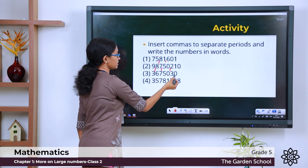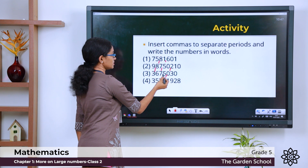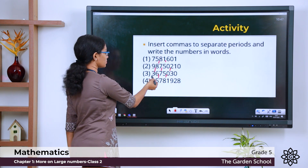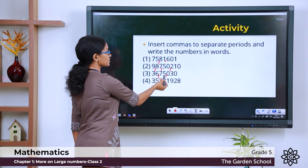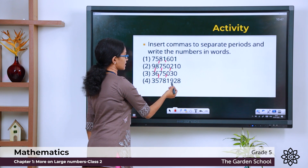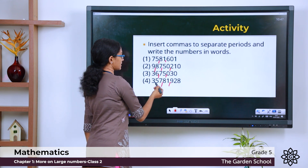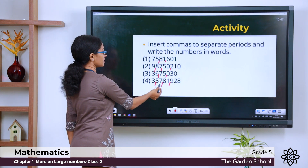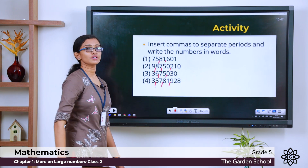The third one: 1s, 10s, 100s — comma. 1000s, 10,000s — comma. Then the lakhs and 10 lakhs. So this one will be 36,00,75,030. The fourth one: 1s, 10s, 100s, 1000s, 10,000s, lakh, 10 lakh. So this is 3 crore, 57,08,1928.